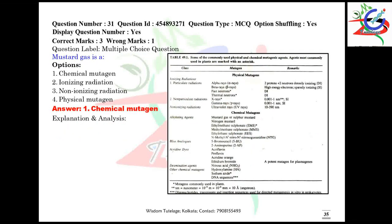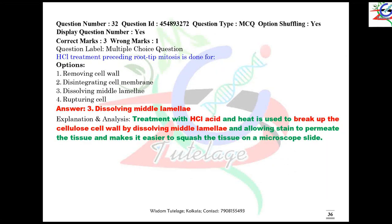Question number 31: mustard gas is obviously a chemical mutagen; the entire list of mutagens is provided here. Question number 32: HCl treatment preceding root tip mitosis is done for dissolving the middle lamella — it is a very common pre-treatment for root tip mitosis.